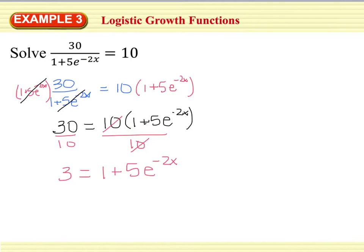And now we have an equation that looks very similar to what we were doing back in 8.6. So I'm going to go ahead and subtract 1 from both sides, which will give us 2 equals 5e to the negative 2x. I need to go and get the e piece by itself before I can go ahead and figure out how I'm going to eliminate e. So in order to do that, I have to divide by 5. So now I have 2/5 equals e to the negative 2x.